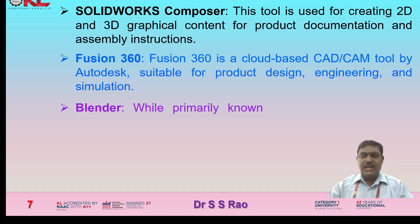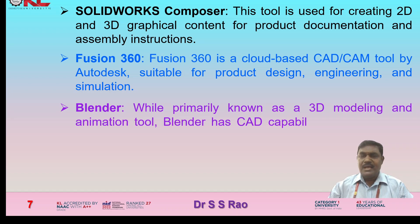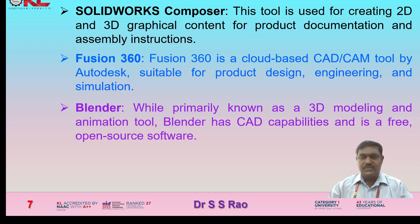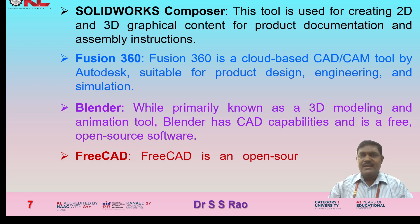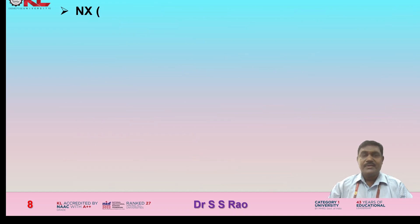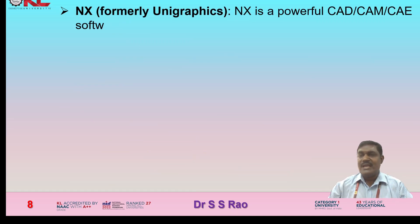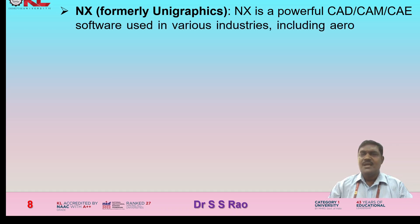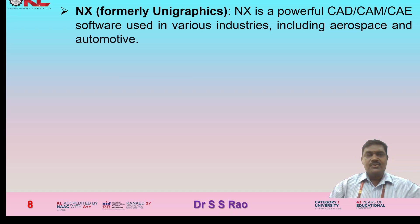Blender, while primarily known as a 3D modeling and animation tool, has CAD capabilities and is free, open-source software. FreeCAD is an open-source parametric 3D CAD modeler designed for use in engineering and product design. NX, formerly called Unigraphics, is a powerful CAD/CAM/CAE software used in various industries including aerospace and automotive.